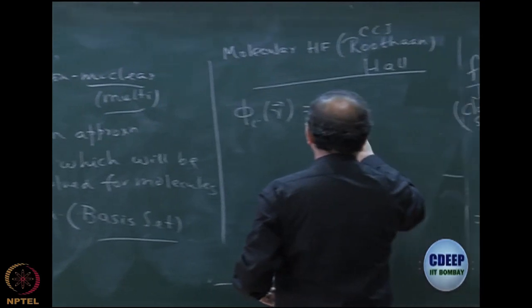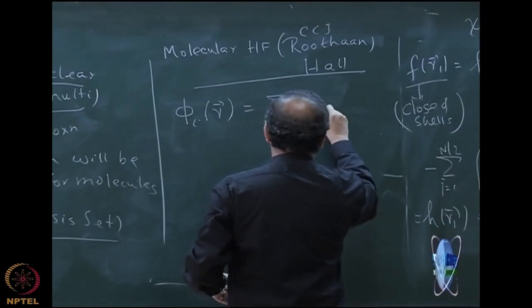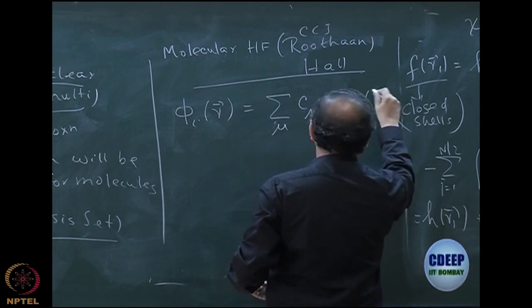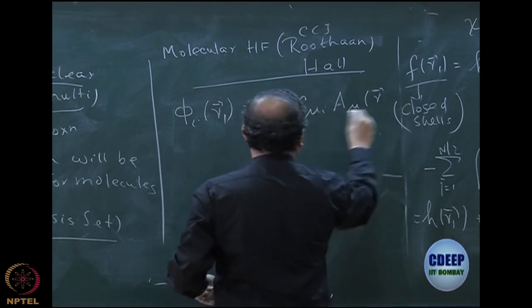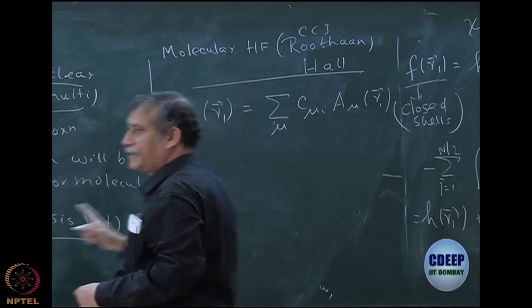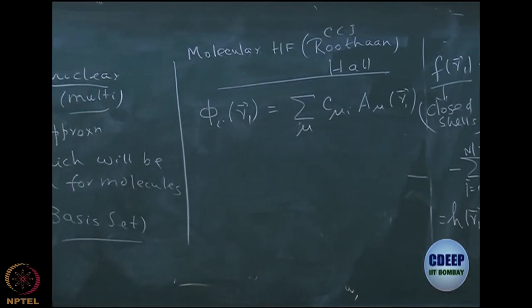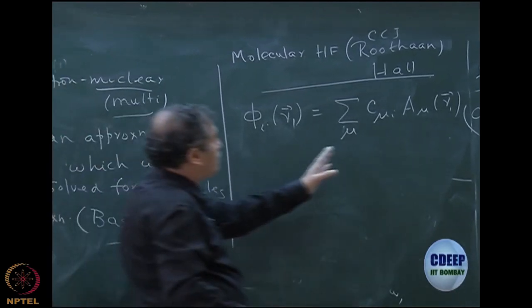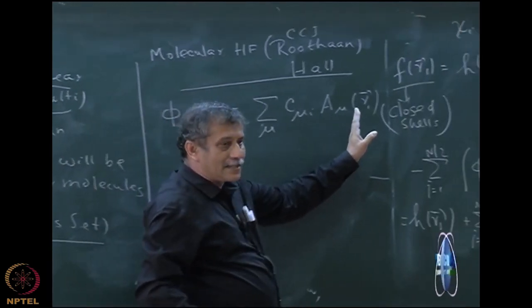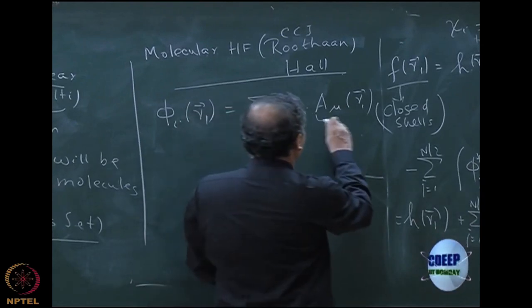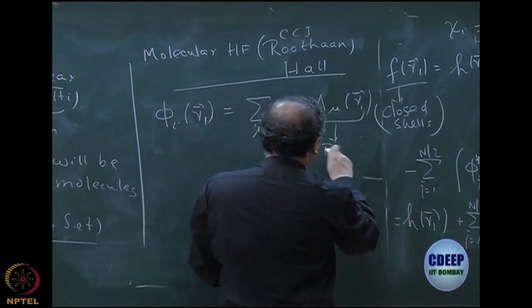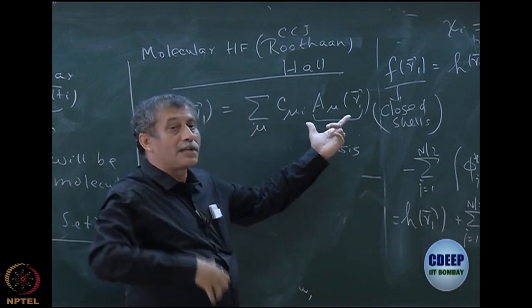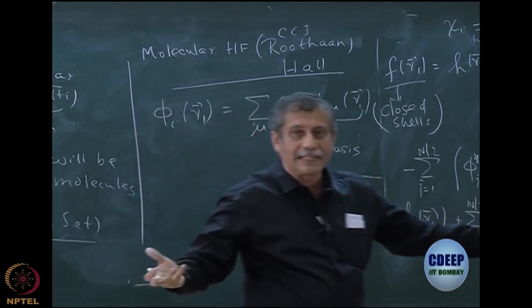So I take a basis, let's say mu, C mu I, and some basis function A mu of R1. Every one electron function can be expanded as a linear combination of a basis and I choose this as a basis A mu. I am deliberately writing A mu because for molecules this can eventually be atomic orbitals, LCAO-MO.